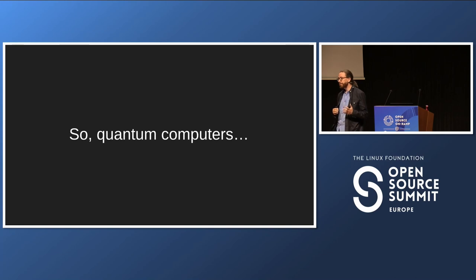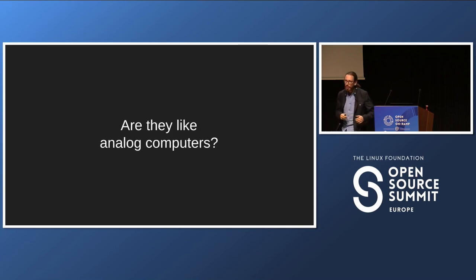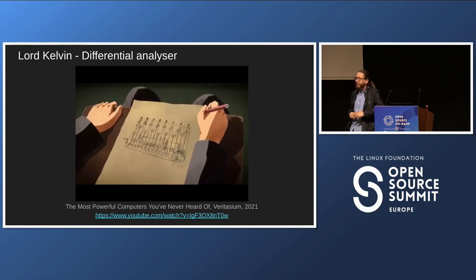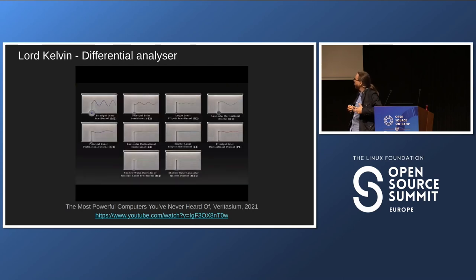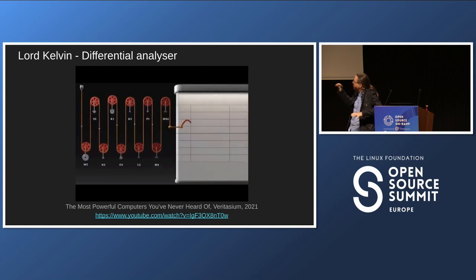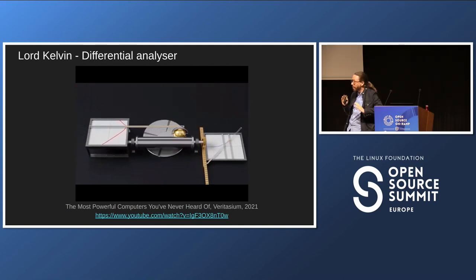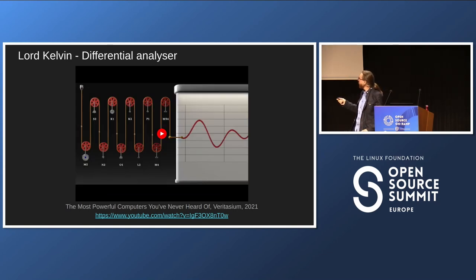Analog computers or rather analog calculators, calculation devices were known for centuries. In 19th century, Lord Kelvin created a differential analyzer. That was a machine that was able to do analog computations. The inputs, for example, were the positions of the wheels, and he used to sum them up just by using a rope. And then later on, he also introduced multiplication.